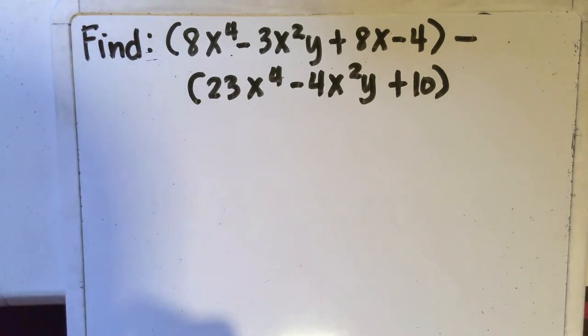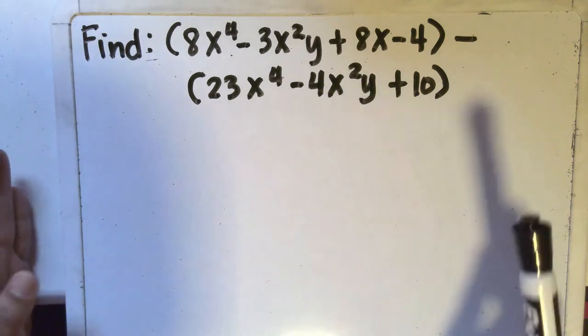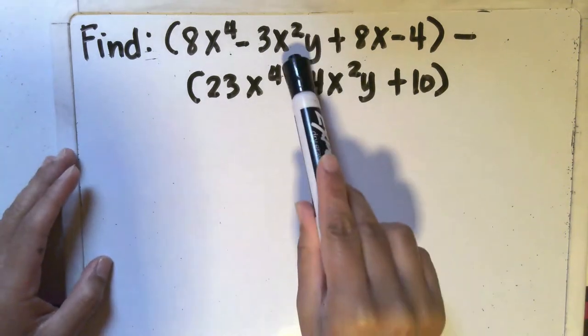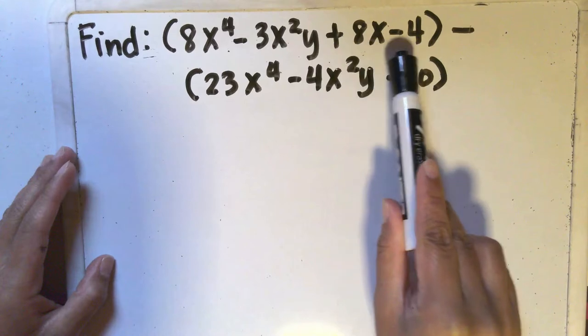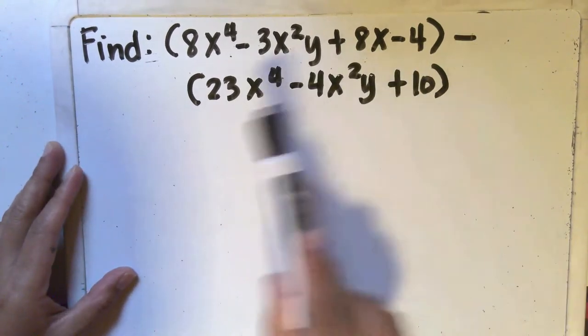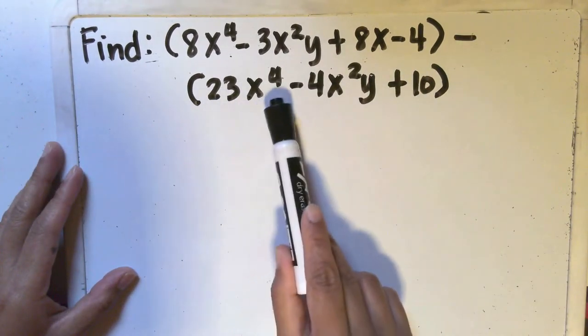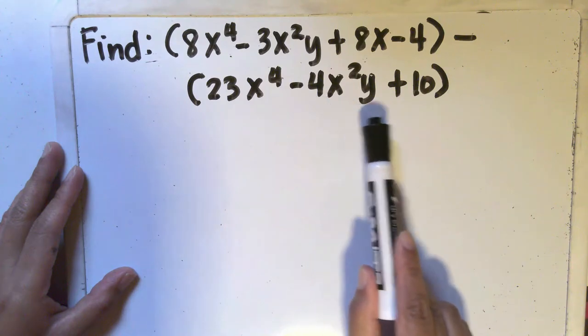In this video, I'm going to show you how to subtract polynomials. Let's say you're asked to find quantity 8x to the 4th minus 3x squared y plus 8x minus 4, minus quantity 23x to the 4th minus 4x squared y plus 10.